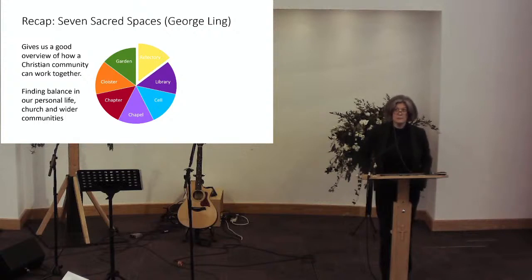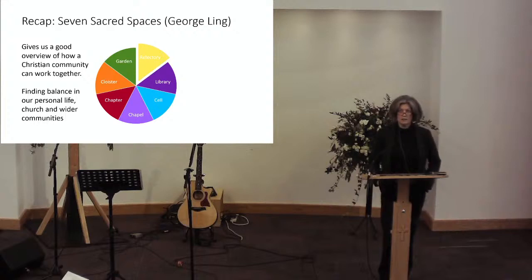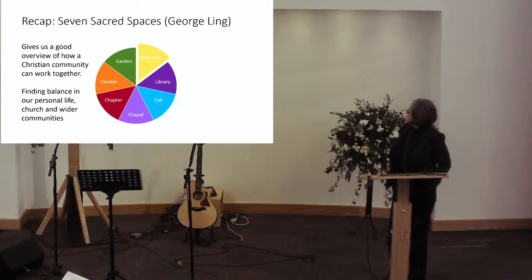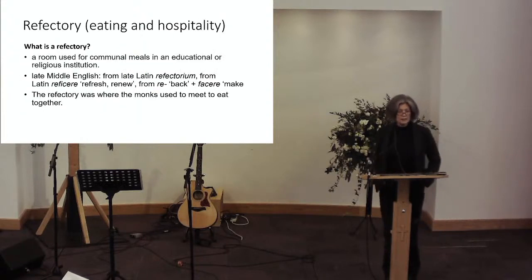So here we are in the seven sacred spaces. It gives us a good overview of where we can look at ourselves in the church itself, where we sit in the community, and how we can identify how our life is in balance or not in balance at the moment. The seven sacred spaces are: refectory, library, cell, chapel, chapter, cloister, and garden. Today we're looking at refectory.